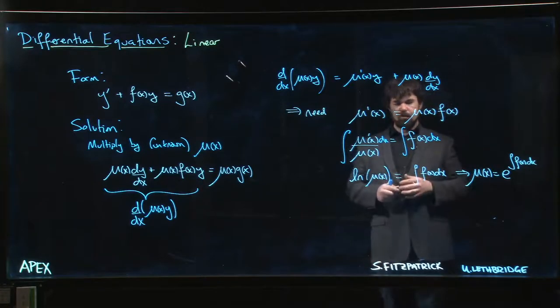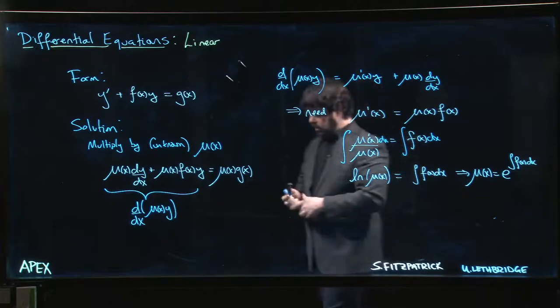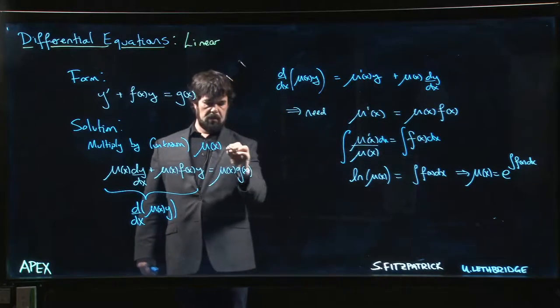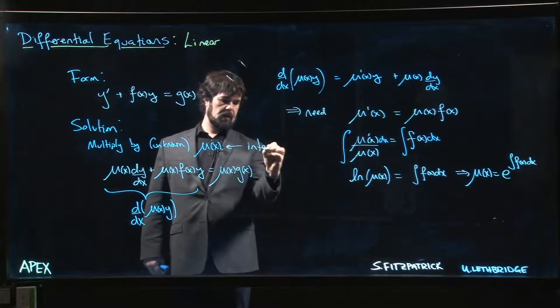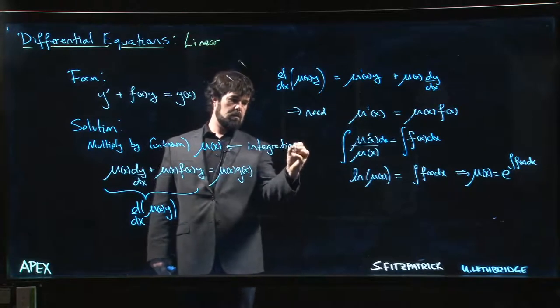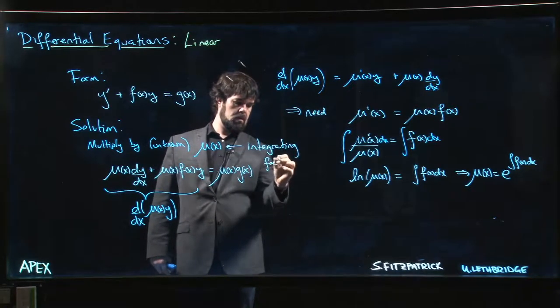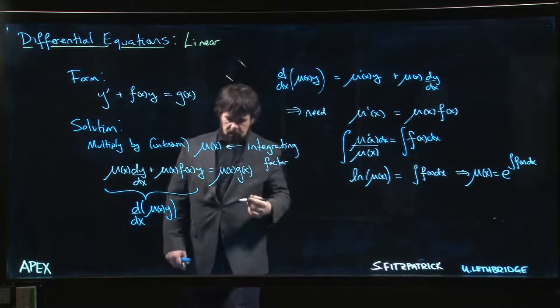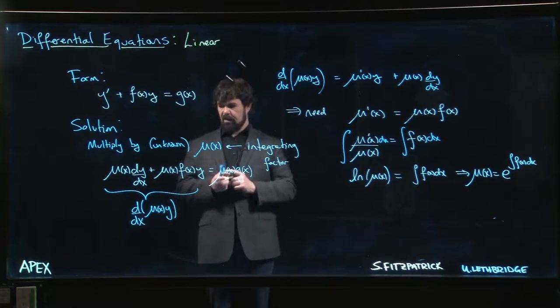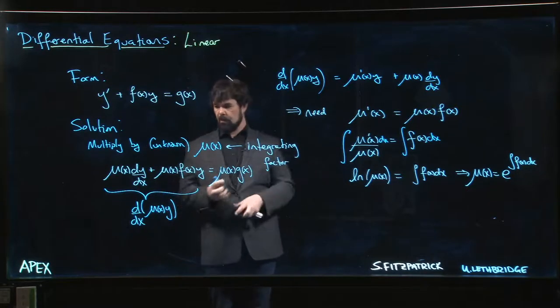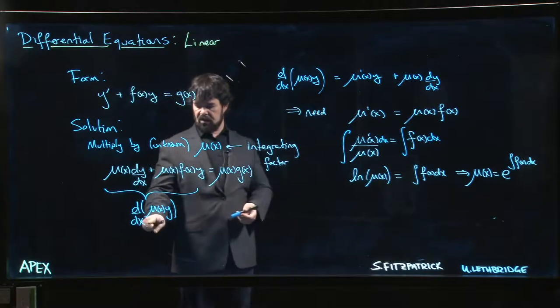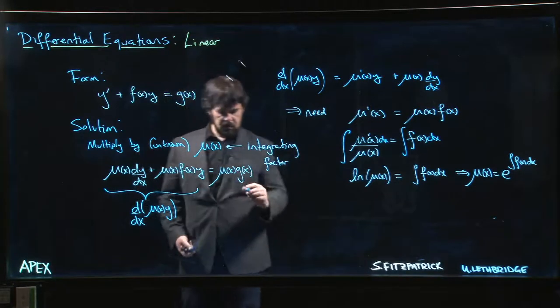So you introduce this mu. Now this mu has a name, it's called an integrating factor. And the reason we call it the integrating factor is now that we've introduced it, we multiply both sides by this mu of x. Well, the whole point is that this left-hand side becomes a derivative.